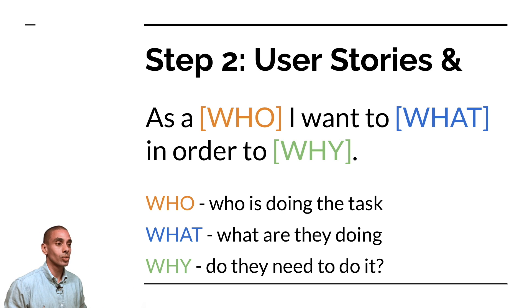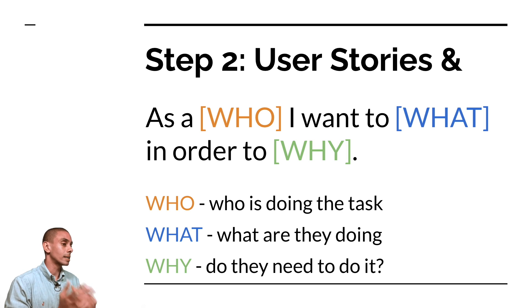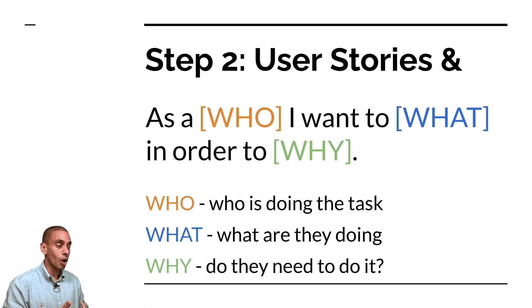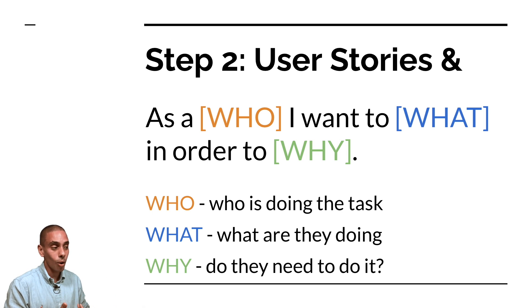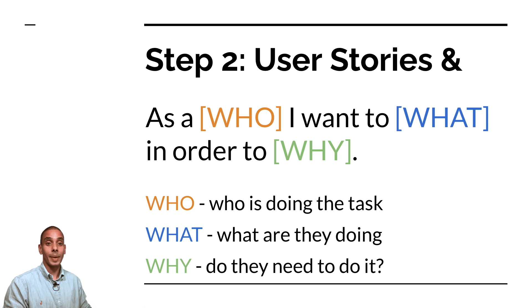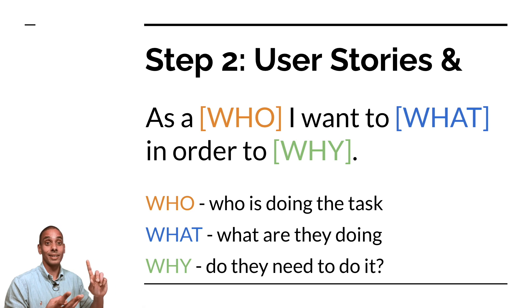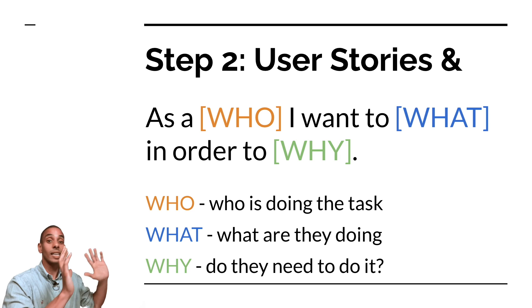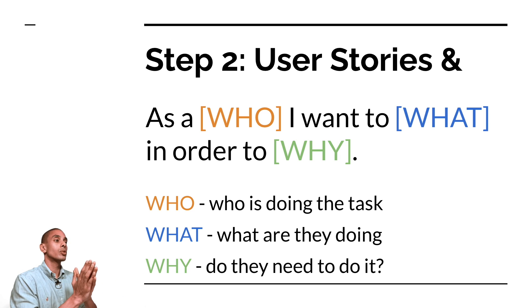The way to write a user story is by starting with 'as a [who]' — so it might be as a business analyst, a data scientist, or a manager. Then 'I want to [what]' — you might want to build a prediction model, generate a report, or reconcile against something. And finally, 'in order to [why]' — which specifies your reason, such as to inform stakeholders, do something faster, or perform a particular process.